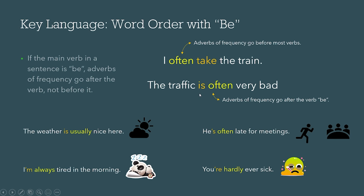Let's look at some examples. 'The weather is usually nice here' — 'usually' is our adverb, and it goes after the be verb form. 'He's often late for meetings' — that would be 'he is often late for meetings,' but here we use the contraction. 'I'm always tired in the morning.' 'You're hardly ever sick.'